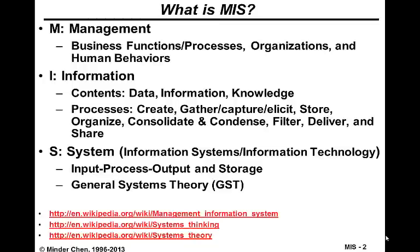MIS can be described based on three aspects: management, information, and system. First of all, you have to understand the business function and process within an organization and how people react to information systems, in order to understand how we should develop and deploy information systems to support users within an organization to perform their business processes and functions.